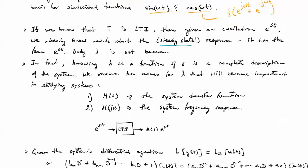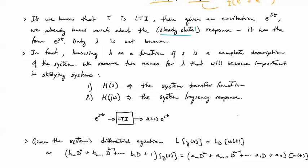Let me scroll down here. We will actually use a different notation than lambda. When we apply an e to the st, we will have a response that we're going to call h of s e to the st. H of s is just another symbol for lambda. We will see that it's also simply the transfer function of the LTI system. Lambda is definitely a function of s, and we will see that here shortly.